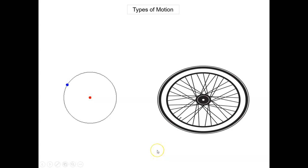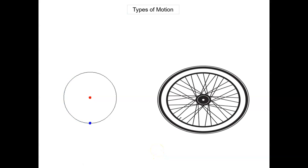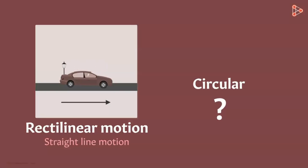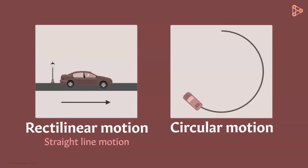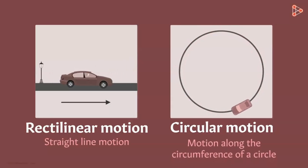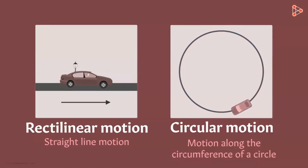Now we will see with the help of video animation about circular motion and rotational motion. If an object is moving in circles, it's undergoing circular motion. More accurately, it's defined as the motion of an object along the circumference of a circle — the circumference being the length of the curved boundary. So if an object is moving along the circumference of a circle, we say it's undergoing circular motion.